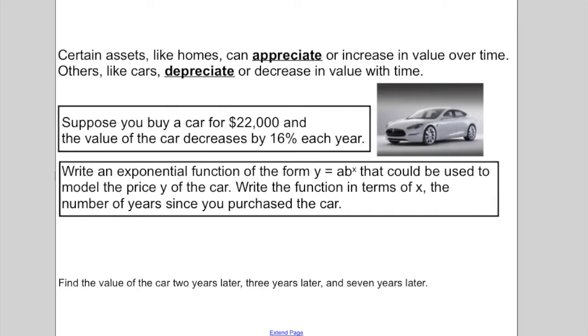So let's suppose you buy a car for $22,000 and the value of the car decreases by 16% each year. Write an exponential function of the form y equals ab to the x that could be used to model the price y of the car. Write the function in terms of x, the number of years since you purchased the car. So y will equal, a is our starting value, so it started out with a value of $22,000 and this one is decreasing. So remember if it's a decrease you would take 1 minus the rate, so 0.16 to the x. So my equation is y equals 22,000 times 0.84 to the x.